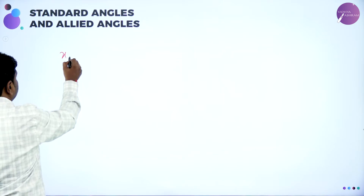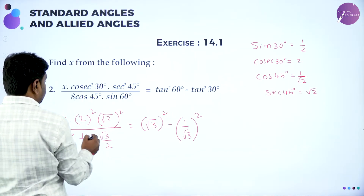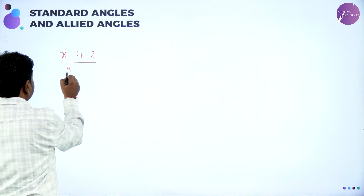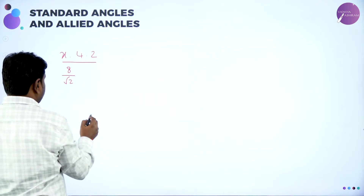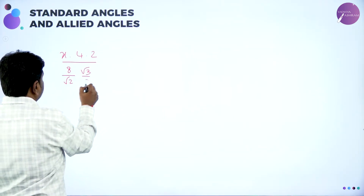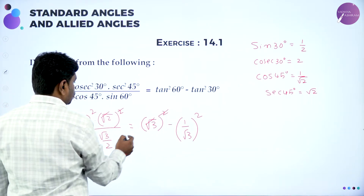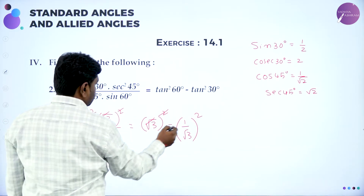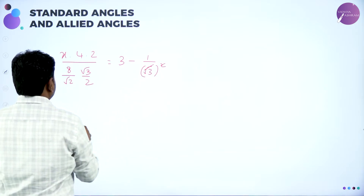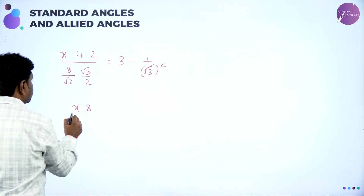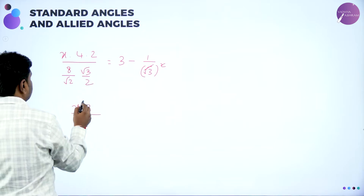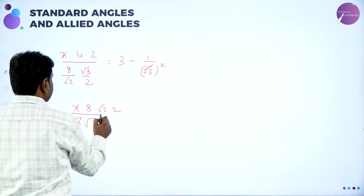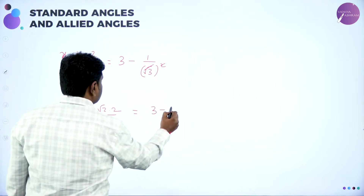Simplify: x · 2² = 4. Root 2 square cancels, leaving 2. Divided by 8/√2 · √3/2. On the right side: (√3)² = 3, minus (1/√3)² = 1/3. We have 8x · 4 · √2 · 2 in the numerator, divided by denominator 8√3, equal to 3 − 1/3.